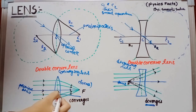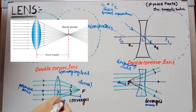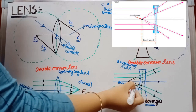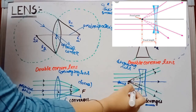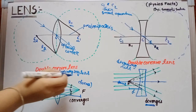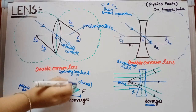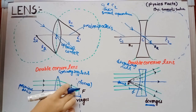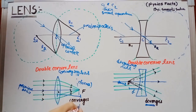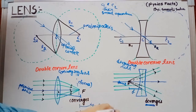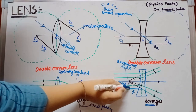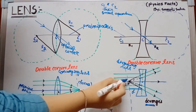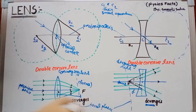The distance between the optical center and the focus is known as the focal length. The plane passing through the focus and perpendicular to the principal axis is known as the focal plane.